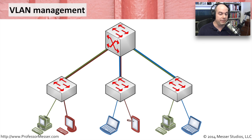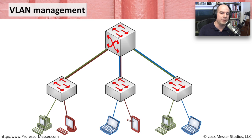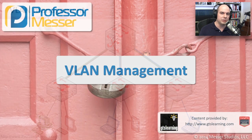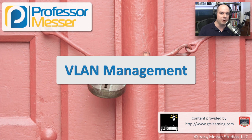If the green VLAN did want to talk to the blue, they would need to route between those to get back. So there are some network requirements to think about when deploying this. But from a security perspective, it gives you a lot of flexibility on where you put people logically in the environment and still protect those very critical resources from other departments.